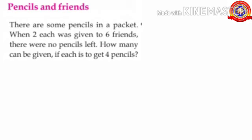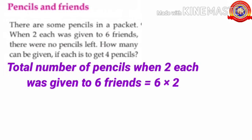Children, how many friends are there in all? Yes, six friends. How many pencils are given to each one? Two. We need to find out the number of pencils when two each was given to six friends. That is, total number of pencils equals six times two, which is six into two equals twelve. So children, total number of pencils equals twelve.